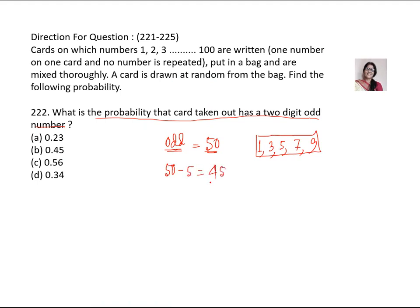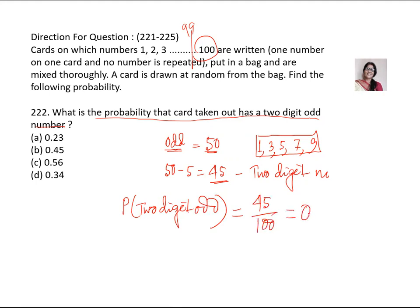So 45 odd numbers are there in 2 digit number. Because 3 digit number is 100, this is not an odd number. Up to 99 is there. So now what is the probability of 2 digit odd? It will be 45 upon total. Total cards is 100. So it will be 0.45. So B is answer.